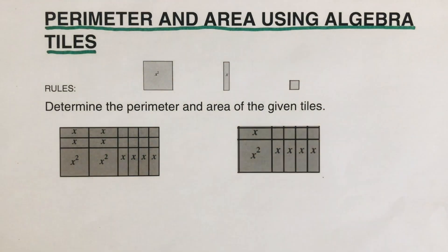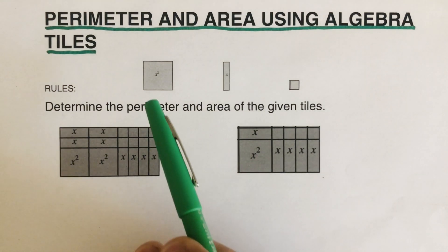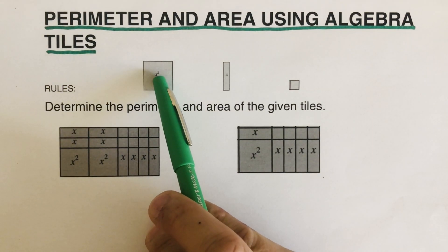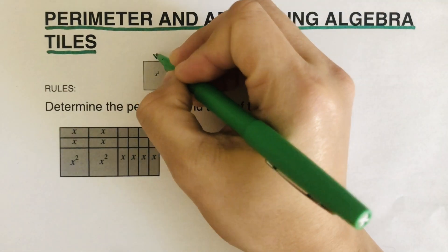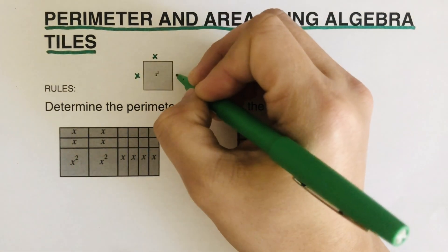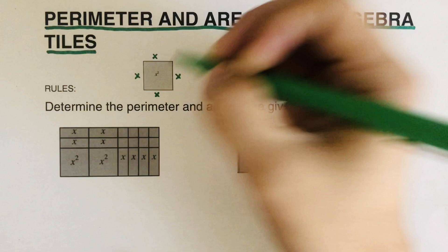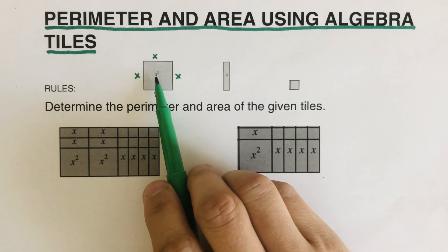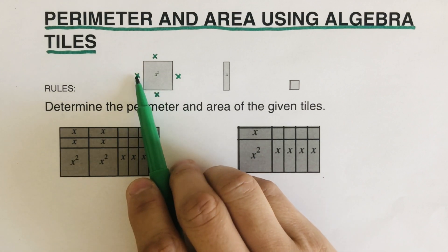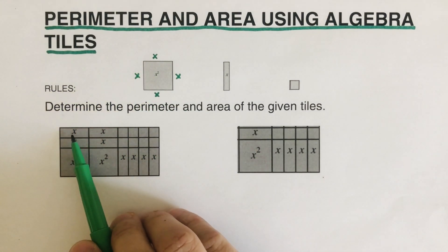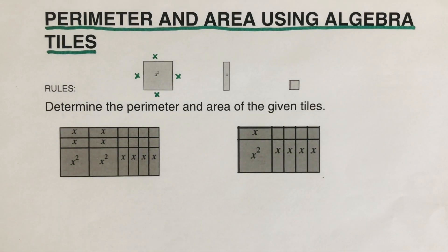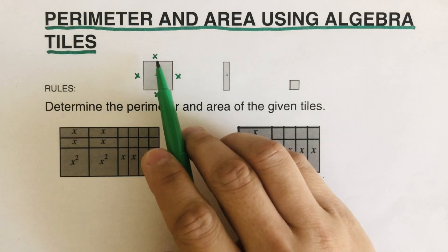Let's have a little review on the algebra tiles. All these tiles have been labeled. This is our x² tile, which means all of the sides are x's. The x² written in the middle is actually the area for this tile, because x times x equals x².